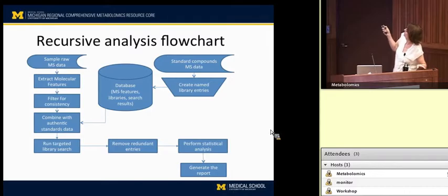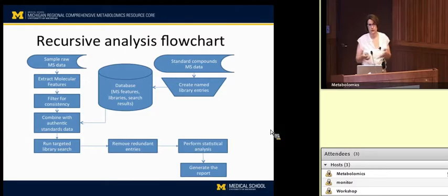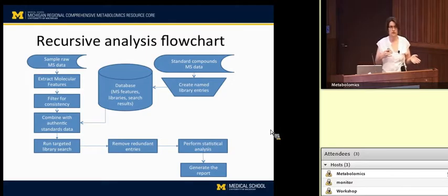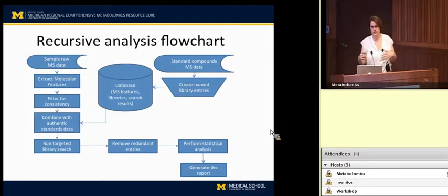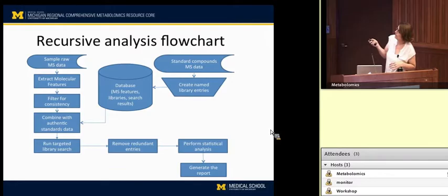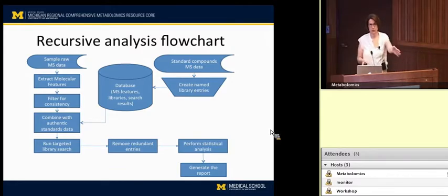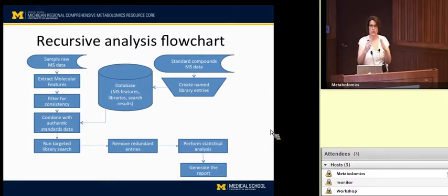At the same time, we have a standard library. The basis of our platform is that we've run about 1,000 authentic standards on our system — we know their retention times, masses, and likely adducts for each compound. We take our standard library and combine it with the on-the-fly library for those samples, then run them all through as if it were a database search. This recursive analysis asks whether a feature detected in sample one with a slightly different name could be the same feature as in sample two, and can we align them across all samples.